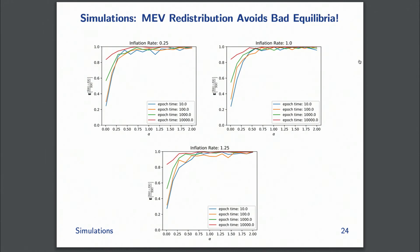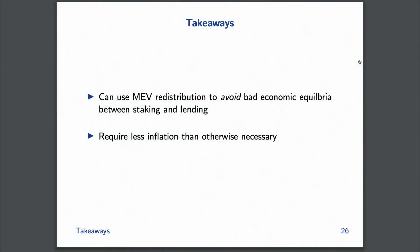Simulations confirm that in many inflation rate scenarios, you can in fact avoid this bad equilibrium. The simulations are even stronger — they show that in finite time you can escape and move toward the all-staking equilibrium where effectively no one is lending. The punchline is: you can use MEV redistribution to avoid bad economic equilibria in proof-of-stake systems, and to do this, you actually require less inflation than otherwise necessary.